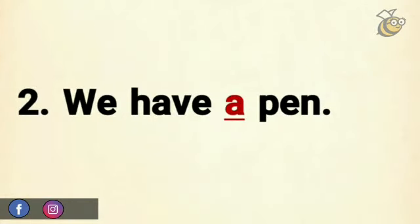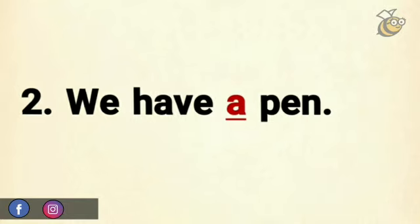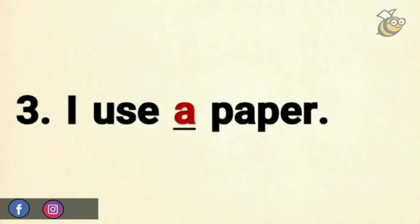we have a pen. Here, again, pen starts with a consonant sound and it is having no specific identity and it is also singular. So, we have used a over here. Next example is,